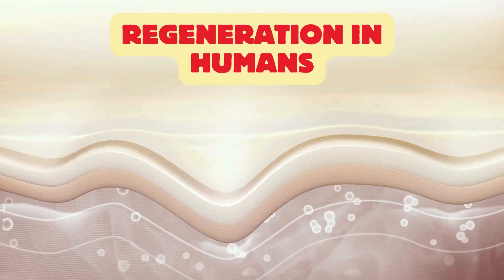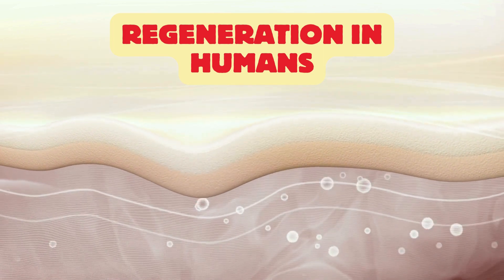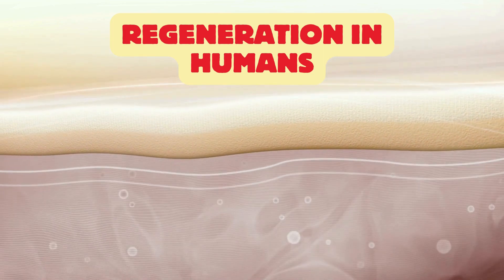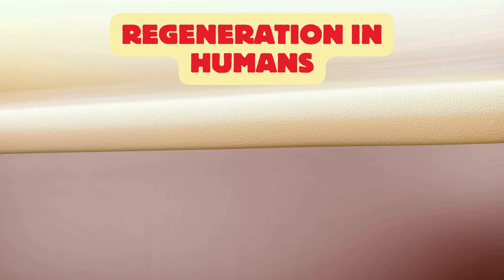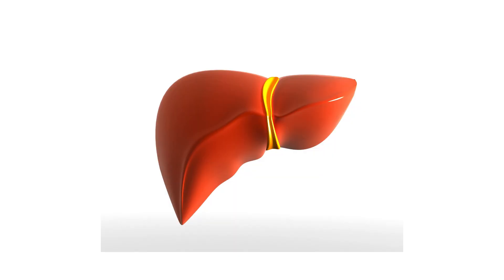In humans, regeneration occurs to a limited extent compared to flatworms and salamanders, but it still plays an important role in healing and tissue repair. The human body has some capacity to regenerate certain tissues and organs. For example, skin can regenerate to repair minor wounds, and the liver can regenerate to restore its functions after injury or partial removal.